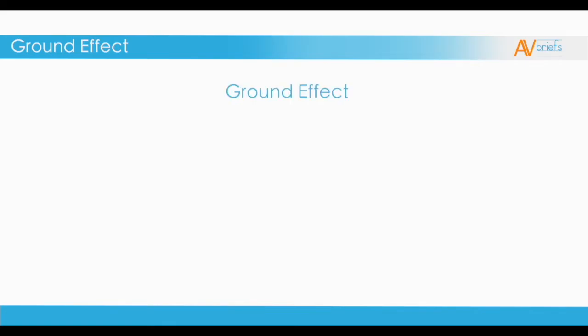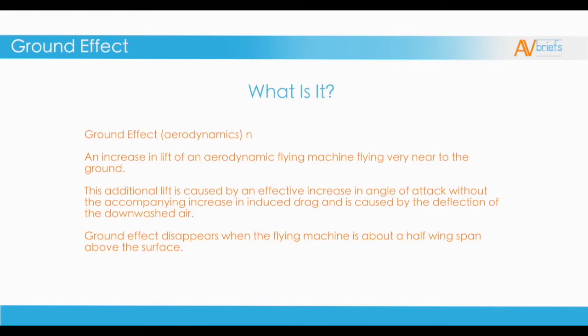Let's take a look at ground effect, and gain an understanding of what it is and how to work with it. In aerodynamics, ground effect is an increase in lift of an aerodynamic flying machine very near the ground. This additional lift is caused by an effective increase in angle of attack without an accompanying increase in induced drag, and it's caused by the deflection of the downwashed air. Ground effect disappears when the flying machine is about a half-wing span above the surface. Ground effect is the exception to the rule that any increase in lift will create an increase in drag.